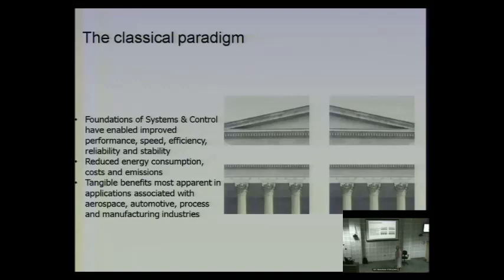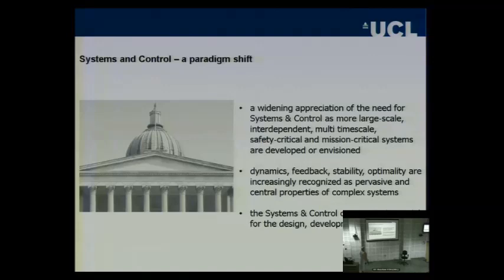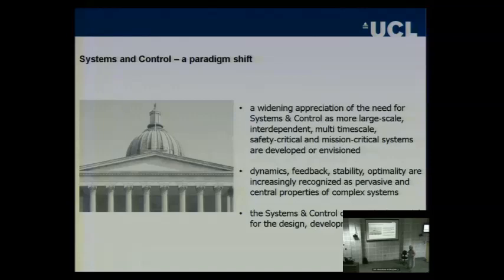Automotive, process, and manufacturing industries were very much the paradigm we were working on, and we have been hugely successful. What the report is hypothesizing for systems and control is the need for us to shift our paradigm — to apply systems and control to more very large scale, interdependent, multi-time scale, safety-critical, and mission-critical systems. The kinds of problems we're solving have become incredibly different.